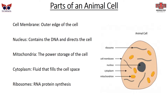Let's start with a typical animal cell and hit the high points on the major pieces. In an animal cell, you have a cell membrane — the outer permeable membrane that controls what goes in and out of the cell. You have the nucleus, the center larger piece that contains the DNA and directs the cell. The mitochondria is the powerhouse of the cell. The cytoplasm is the fluid that fills all the cell space between the various organelles. And the ribosomes are involved in protein synthesis and RNA.